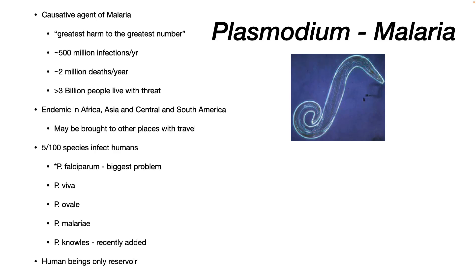Our next disease is malaria. It has caused the greatest harm to the greatest number of people on earth. There are an estimated 500 million infections per year and 2 million deaths. 3 billion — that's billion with a B — people live under the threat of infection. Malaria is endemic in Africa, Asia, and Central and South America. Infections may be detected in other places due to travel to endemic areas.